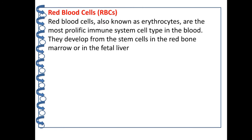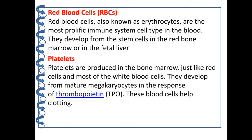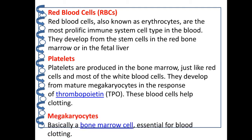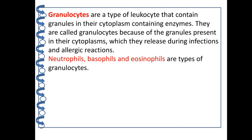Red blood cells, known as erythrocytes, are the most prolific immune system cell type in the blood. They develop from stem cells in the red bone marrow or in the fetal liver, and there is an absence of the nucleus in red blood cells. Platelets are produced in the bone marrow and help in blood clotting. Megakaryocytes are basically bone marrow cells essential for blood clotting. Granulocytes are a type of leukocyte that contains granules and may be further of different kinds such as neutrophils, basophils, and eosinophils.